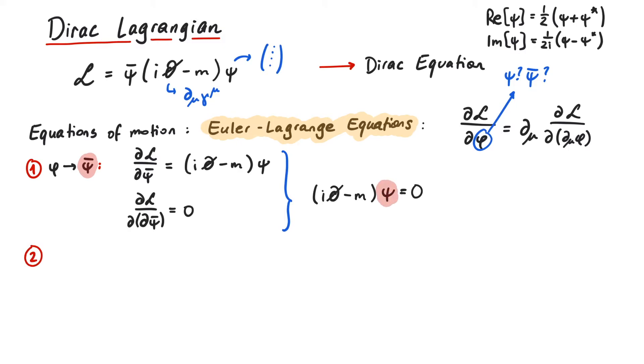Next we calculate the Euler-Lagrange equations for psi. We could expect that this leads to the EOM for psi bar. In order to calculate the derivatives, let's rewrite the Lagrangian by multiplying the terms in brackets.